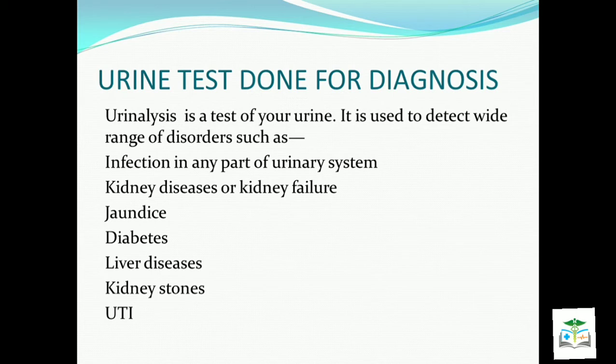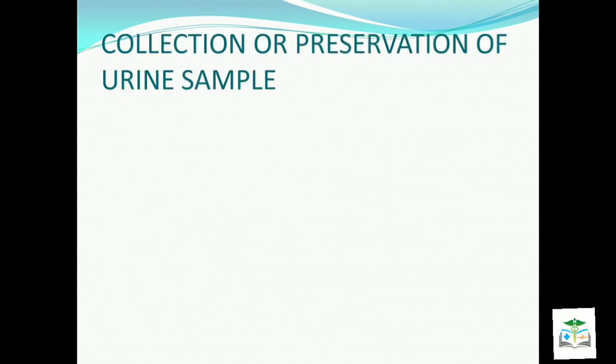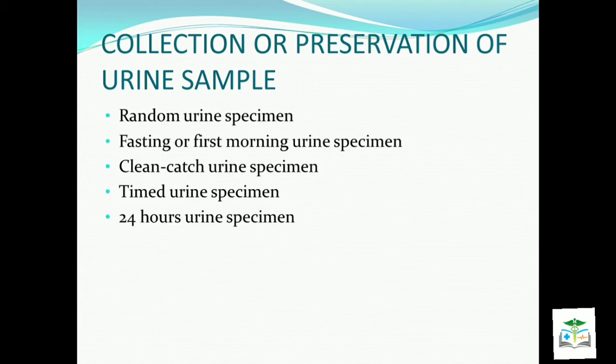Now, collection and preservation of urine specimen. The patient must be told how to collect urine. There are many methods of urine collection. One is random urine specimen — in this, a specimen is collected at any time during the entire day. The condition is that we must collect the middle portion of urine; the starting portion is released and the middle portion is collected in a container.